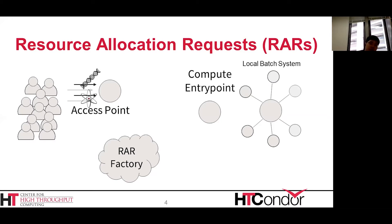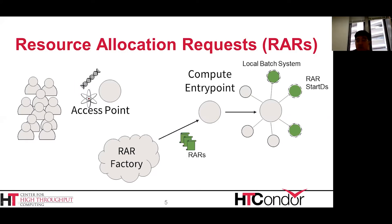In this model, users in your communities submit their work to the Condor schedd at their access point. On behalf of those users, the factory will submit resource allocation requests to the CE, sized to support all of the work submitted to the access point. The CE will then take those allocation requests and submit them to the local batch system, taking into account local policies, specific partitions, or accounting groups. Then the local batch system will start running these jobs on their worker nodes.